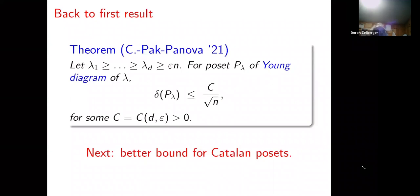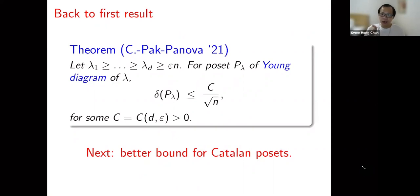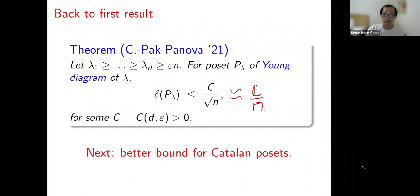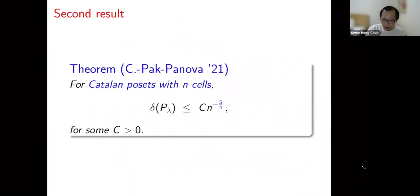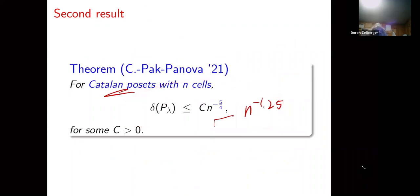Question: Is the 1/√n rate sharp? Our answer is no — we believe the correct rate is at least C/n. The 1/√n is a limitation of the method. To show this can be improved, we prove that for the Catalan poset specifically, the sorting probability is actually of order n^(−1.25), which is even better than 1/n. The Catalan poset is the special Young diagram with exactly two rows (a rectangle). Its linear extensions correspond to up-down lattice paths that stay above the x-axis, and the number of such paths is the Catalan number 1/(n+1) · C(2n, n).